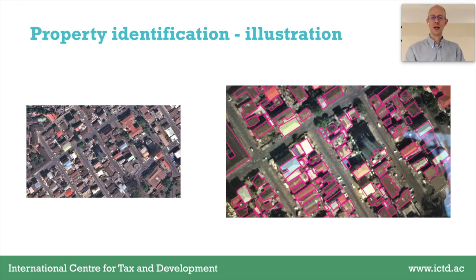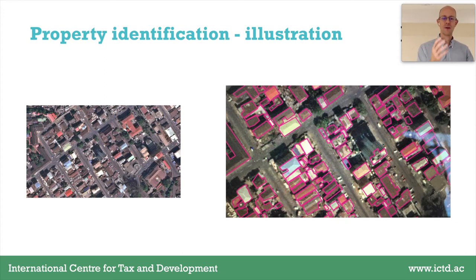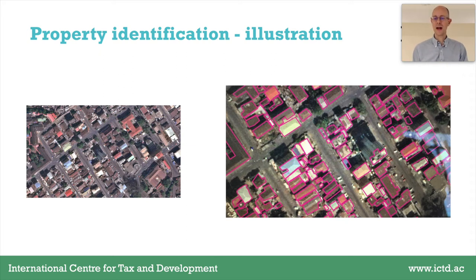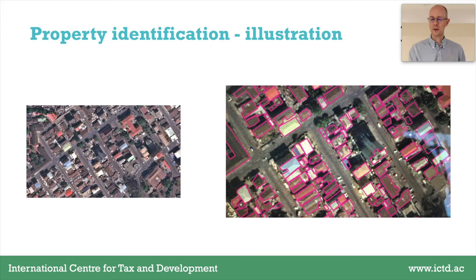The central advantage of using satellite imagery is that it's easily verifiable after the fact, can be easily updated as maps change, and provides a relatively quick and cost-effective means for bringing properties into the property register, particularly in larger areas. On the left you can see an initial satellite image of an urban area, and on the right an automatic algorithm that identifies each individual property within the city. These automatic algorithms are fairly accurate at distinguishing individual properties, but they do make errors, and so ground-truthing is important to ensure accuracy and completeness.